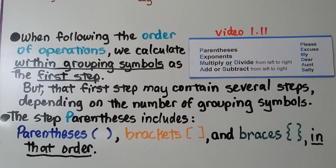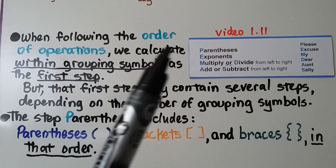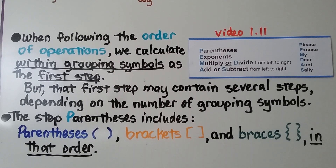When following the order of operations, we calculate within grouping symbols as the first step. The very first step in PEMDAS — the order of operations — is parentheses, which we covered in video 1.11, linked in the description. But that first step may contain several sub-steps depending on the number of grouping symbols: parentheses, then brackets, then braces, in that order.